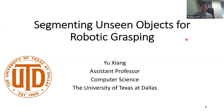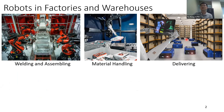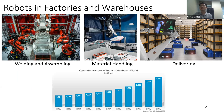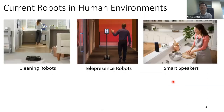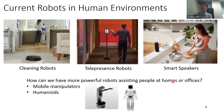Let me start with some motivation. Today, we can see a lot of robots working in factories and warehouses doing various welding and assembling, material handling, and delivering. According to the International Federation of Robotics, the number of industry robots is increasing every year. But when we look at robots in human environments, we find examples such as cleaning robots, telepresence robots, or smart speakers. The question is, why can't we have more powerful robots that can assist people at homes or offices?